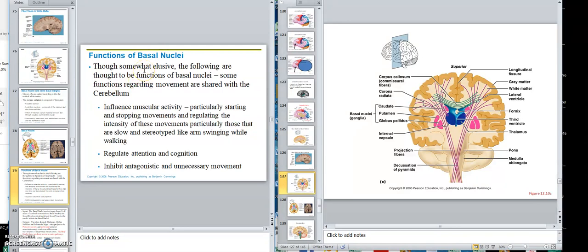Functions of the basal nuclei. What are they? Though somewhat elusive, the following are thought to be the functions of the basal nuclei, old name ganglia. Influence muscle activity, particularly starting and stopping movements and regulating the intensity of movements and slow.